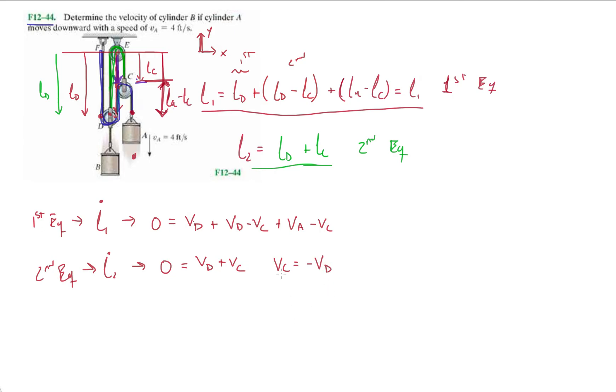All right. And then if we simplify the top equation, we have two vd minus two vc minus two vc plus va equals zero. So now we're going to plug it into this equation right there.